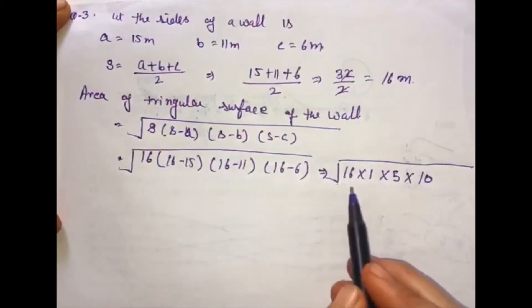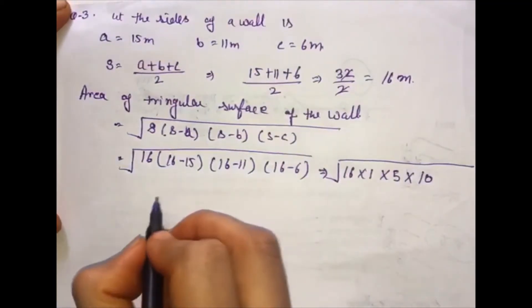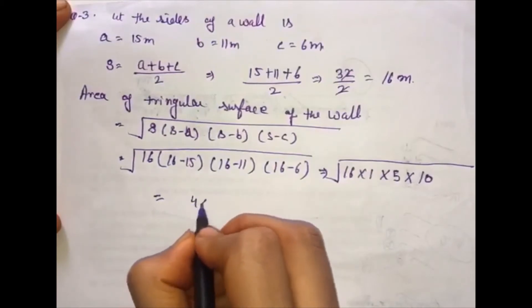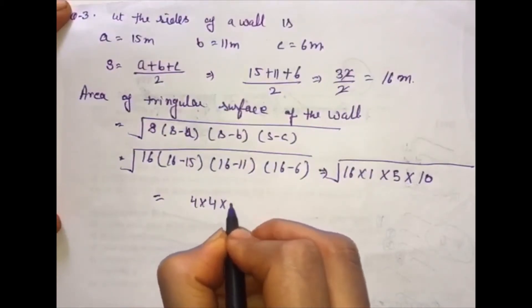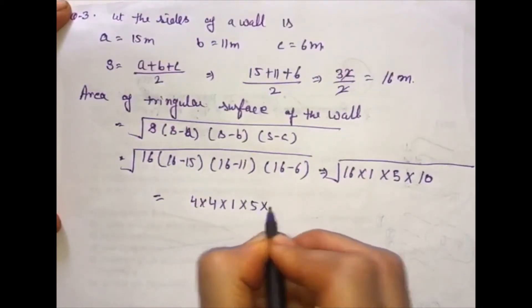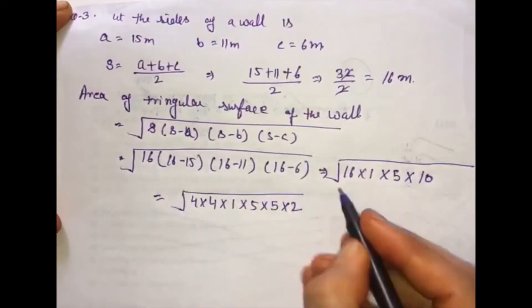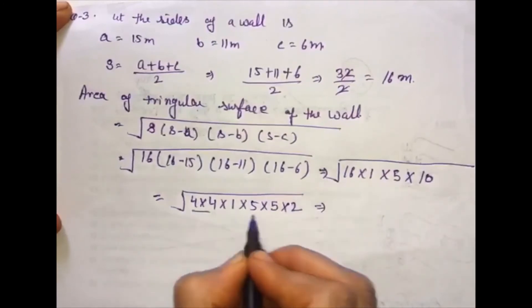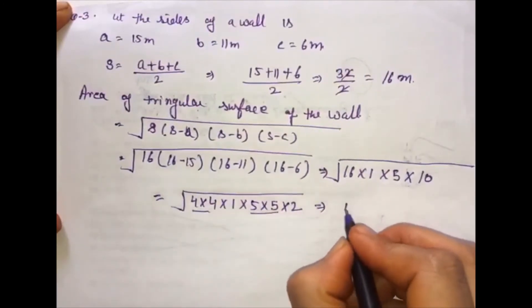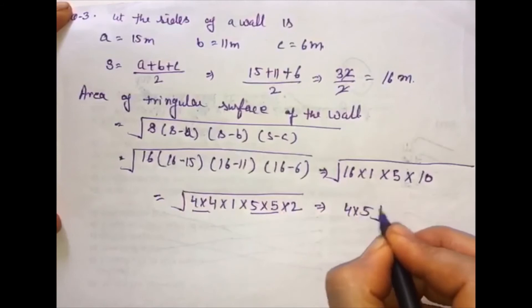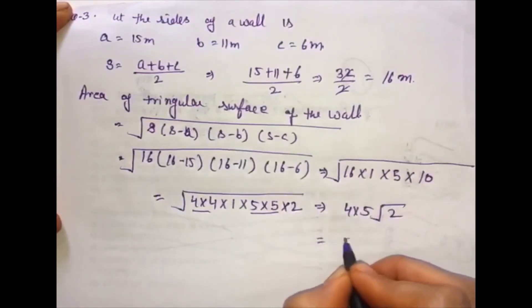16 is the square of 4, so we distribute: 4 multiply 4, multiply 5, multiply 2. When we take the pair of 2 outside, this becomes 4 multiply 5 root 2, which is 20 root 2.